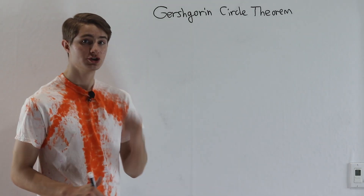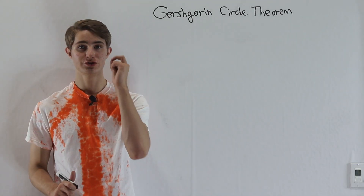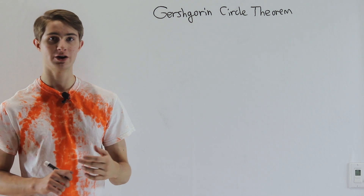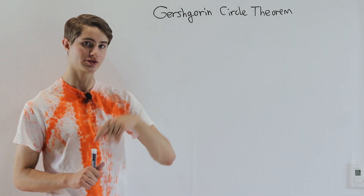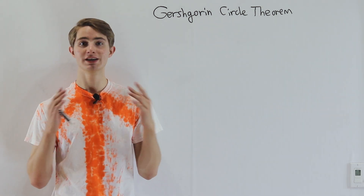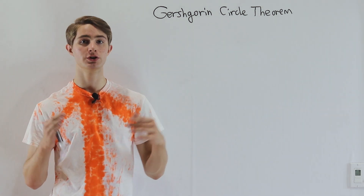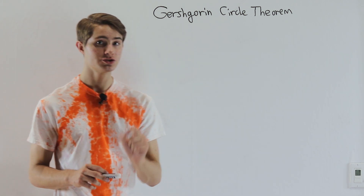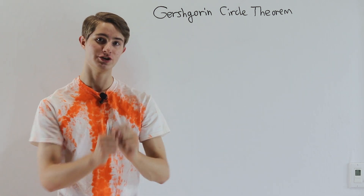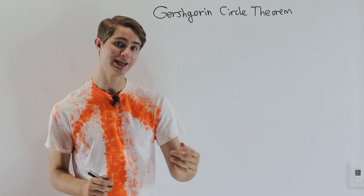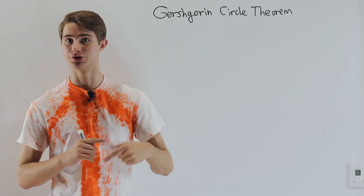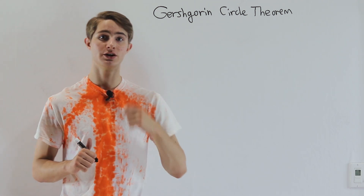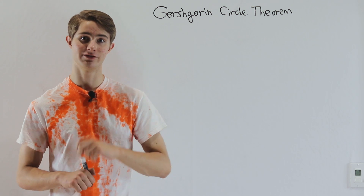We are going to talk about the Gershgorin Circle Theorem. In my video about the shifted inverse power method, I talked about how we can find the eigenvalue closest to any number alpha. But the closer we choose alpha to an actual eigenvalue, the faster the iterations go. So we want to pick good values of alpha that we think are close to eigenvalues.